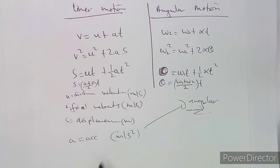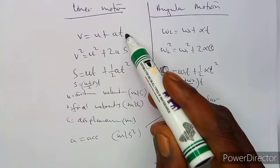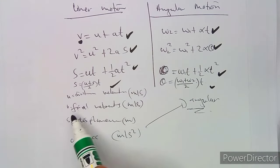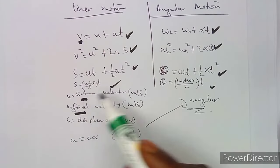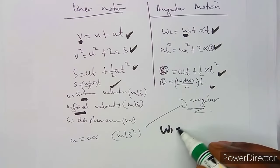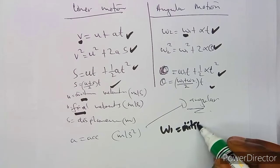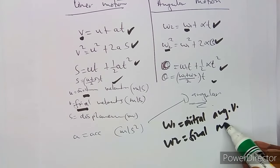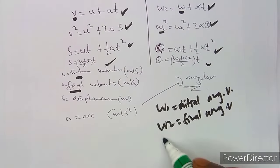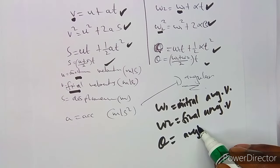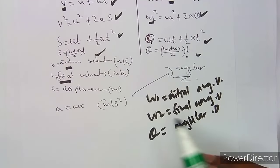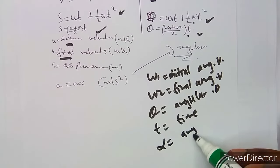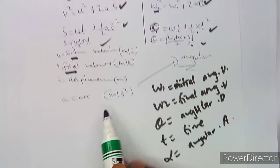These are the important formulas between linear motion and angular motion. In the formula table: v corresponds to final velocity in linear motion, and ω₂ is the final angular velocity; u is initial linear velocity, and ω₁ is the initial angular velocity; theta (θ) is angular displacement; t is time in seconds; and alpha (α) is angular acceleration.